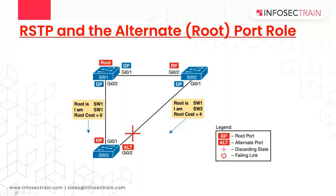With STP, each non-root switch places one port in the STP root port role. RSTP follows the same convention with the same exact rules for choosing the root port, but takes an additional step beyond STP by naming other possible root ports and identifying them as alternate ports.